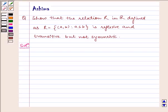Hello and welcome to the session. Let us discuss the following problem today. Show that the relation R in R defined as R = {(a,b) : a ≤ b} is reflexive and transitive but not symmetric.